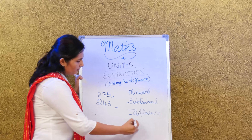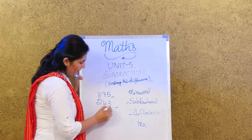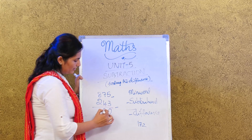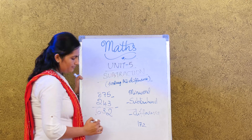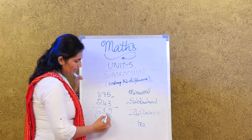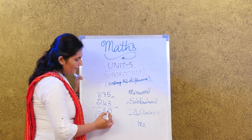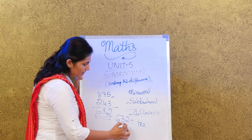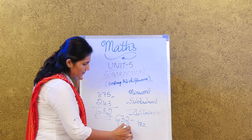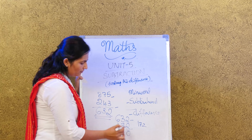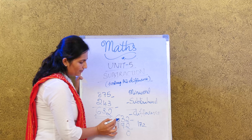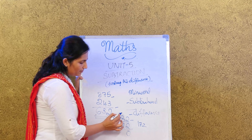What we will do is put 172 aside and first do 875 minus 243: 5 minus 3 is 2, 7 minus 4 is 3, 8 minus 2 is 6. 632 is the answer we got. Now we do 632 minus 172: 2 minus 2 is 0. Then 3 is a smaller number than 7, so what do we do — we borrow.